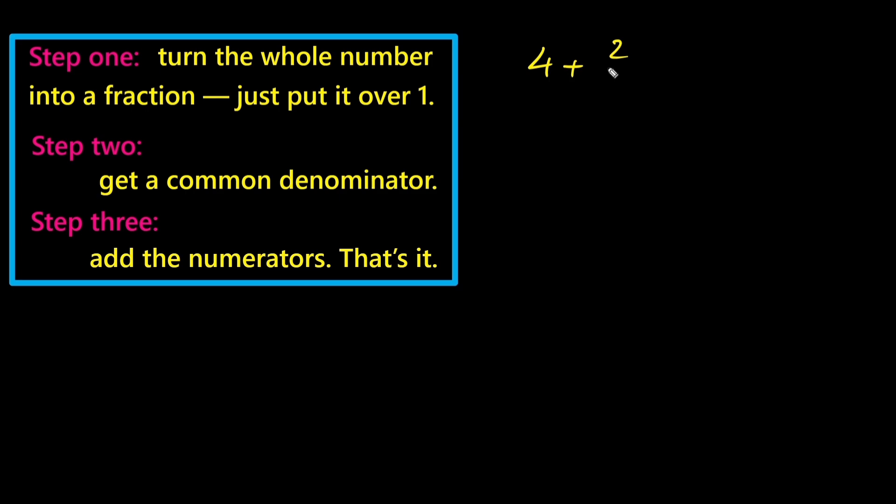So how can we add four plus two-thirds? Well, first we write four as a fraction. That's four over one.